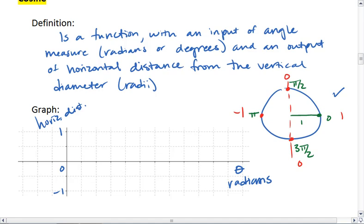And we'll have horizontal distance. At 0, we're starting up at 1. Let me also label.